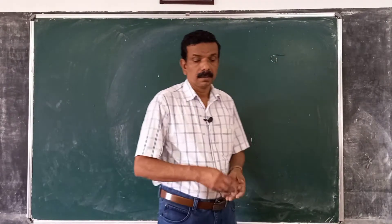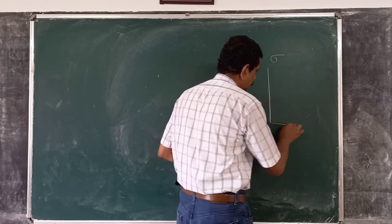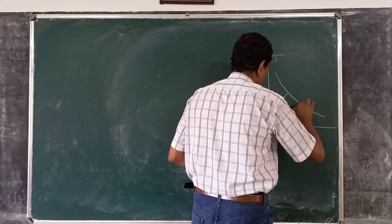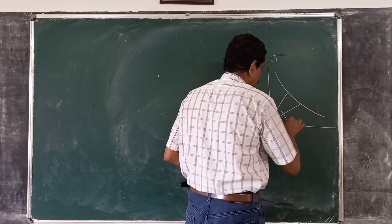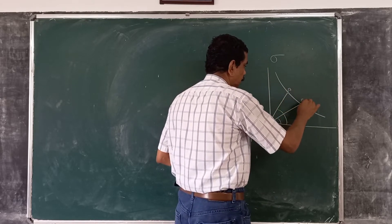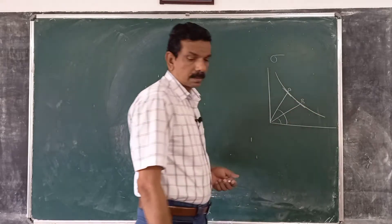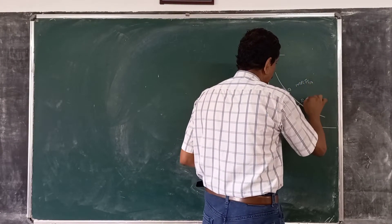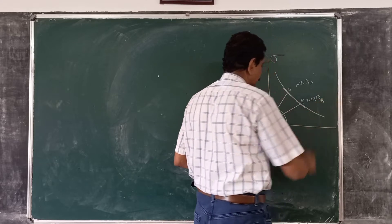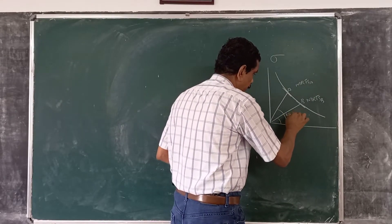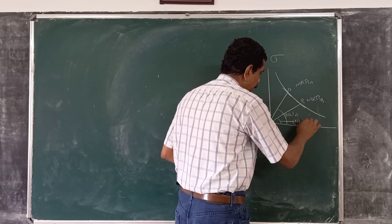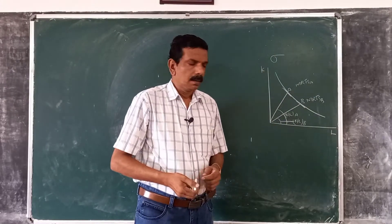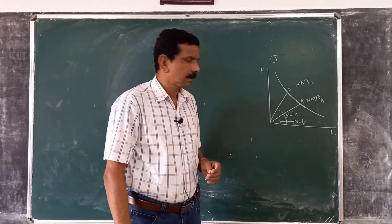To explain this, consider an isoquant and define two points A and B. At point A and point B, we have MRTS at A, MRTS at B, K/L at A, and K/L at B — where labour is on one axis and capital on the other. As you move from A to B, K/L decreases.